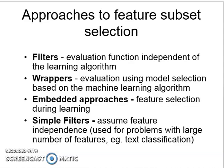The approaches for feature subset selection are: Filter — where the evaluation function is independent of the learning algorithm; Wrapper — evaluating using a model, which is based on a machine learning algorithm; and Embedded approach — where feature selection occurs during learning. A simple filter assumes feature independence and is used for problems with a large number of features, like text classification.